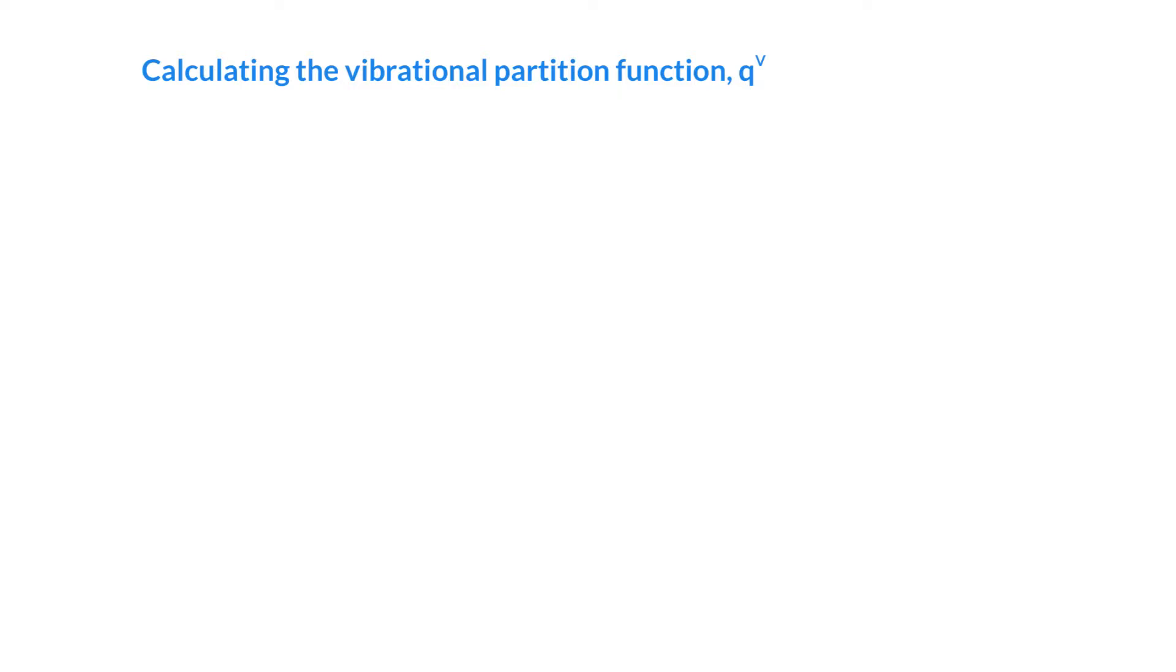So let's go ahead and calculate the vibrational partition function q^v. We can just kind of cut to the chase here. It turns out that for a simple harmonic oscillator, q^v is 1 over 1 minus e to the minus h nu, where nu is our characteristic frequency of vibration, over kT.